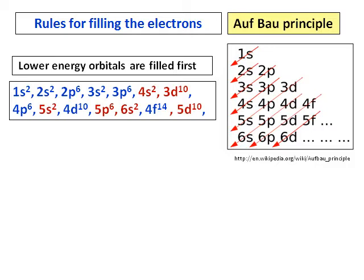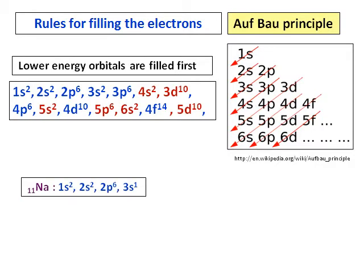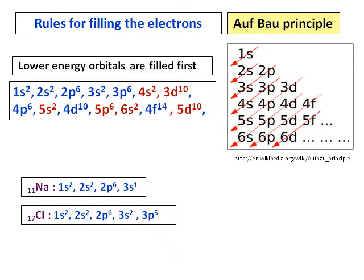Continuing the order: 4d, 5p, 6s, and so on. It is good to refer to the Aufbau diagram to identify which level is lower. Based on this, the electronic configuration of sodium, which has 11 electrons, is 1s2, 2s2, 2p6 — that makes 10 electrons — and 1 electron in 3s1.